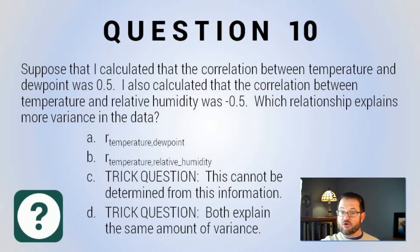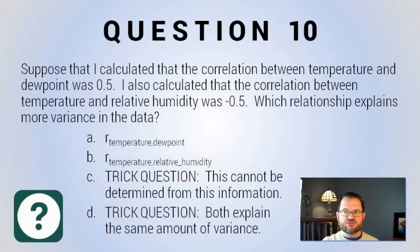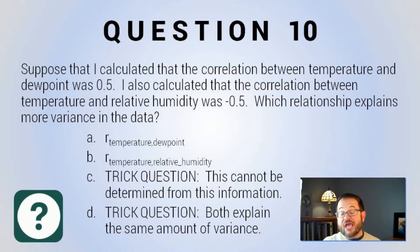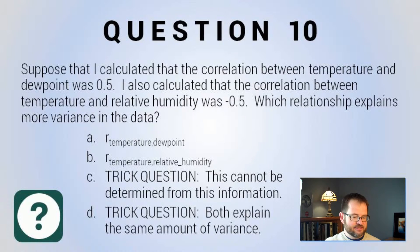Now, one correlation is negative .5 and the other correlation is .5, but both of them, when you square, you get .25 or 25%. So they actually are both explaining the same amount of variance. Make sure you understand that concept.